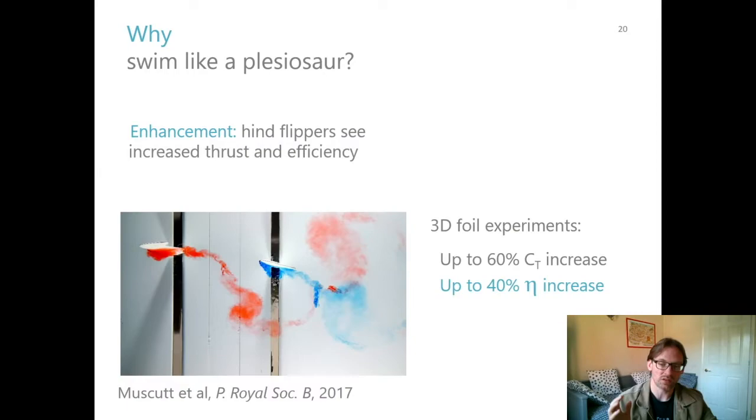So adding one more flipper behind ends up being much better in terms of increasing your thrust and increasing your efficiency. You're kind of coasting, sort of the way that you can coast behind someone when you're riding your bicycle, you can draft behind them to reduce your drag.